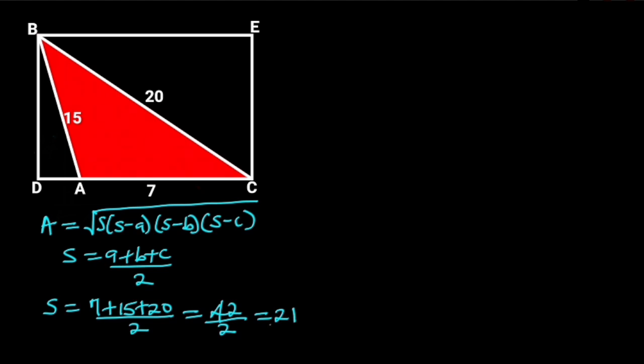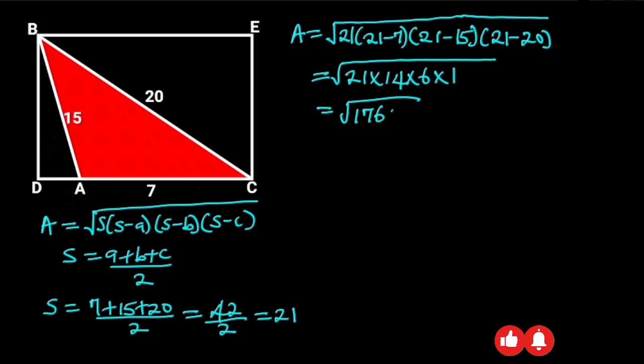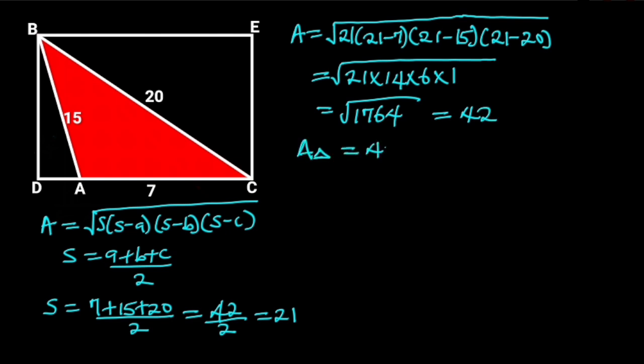Now we know the value of S. The area of triangle ABC will be the square root of 21 times 21 minus 7 times 21 minus 15 times 21 minus 20. 21 times 14 times 6 times 1 is 1764. The square root of 1764 is equal to 42. So the area of triangle ABC is equal to 42 square units.